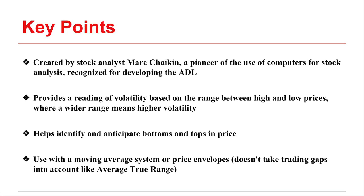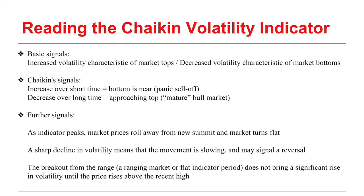Chaikin's volatility indicator is not intended to be used alone. It's best used alongside a moving average system or price envelopes. The indicator can be interpreted in a number of ways. On a basic level, a sharp increase in volatility is characteristic of price top-outs, where the increasing volatility corresponds to the petering out of a trend into a trading range.